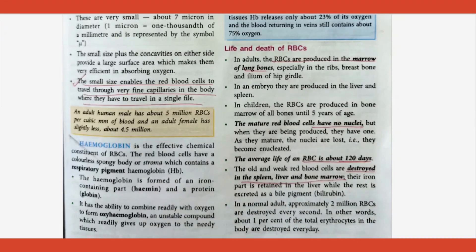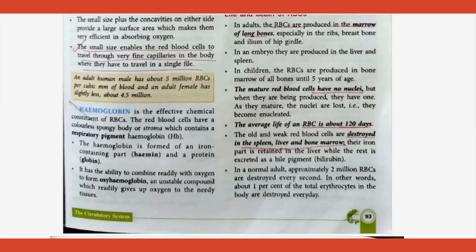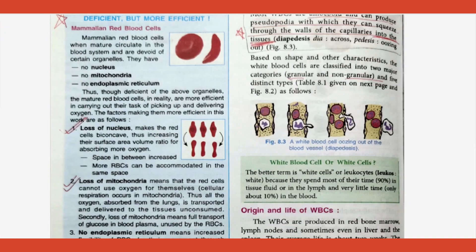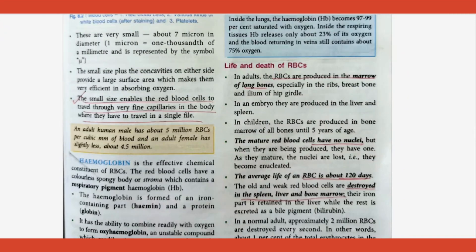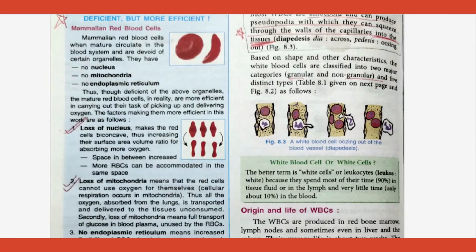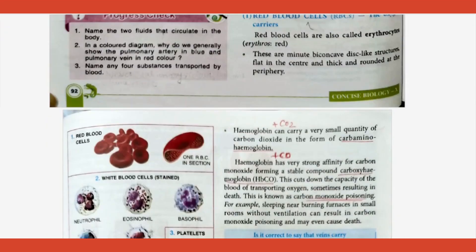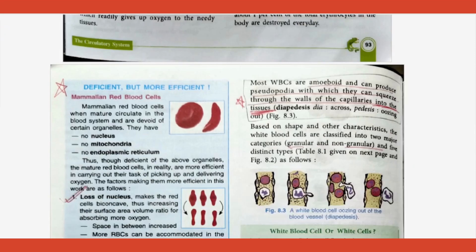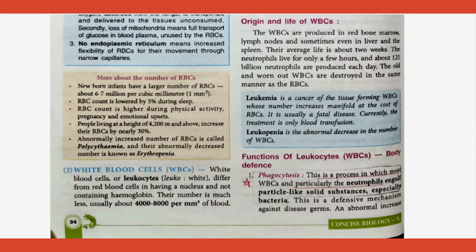Why is RBC small in size? It enables it to travel through fine capillaries — underline that statement. From the table: why do RBCs not have a nucleus, mitochondria, or endoplasmic reticulum? None of these are present in RBCs. RBCs are biconcave in shape — another question. The biconcave shape gives a larger surface area, making them very efficient in absorbing oxygen. These are frequent board questions.